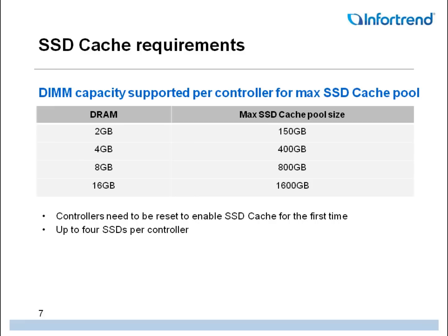SSD cache pool sizes are directly related to the number of controllers on your EonStore DS system and the amount of system memory. Up to 4 SSDs per controller can be associated with SSD cache. 2GB of memory is needed for every 150GB of SSD cache pool capacity. This means that on a dual controller EonStore DS system with 16GB memory, you could have an SSD cache pool of 3200GB — which is a lot of space for important speed-sensitive data.